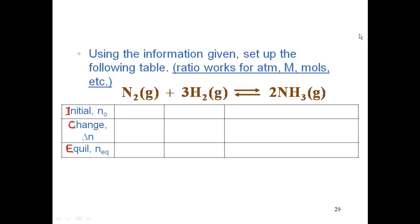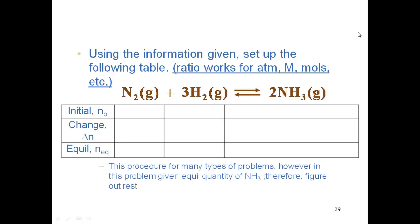So first thing we do is let's put in what we know initially about our components. We know that we have 1 mole of N₂ and 3 moles of hydrogen.